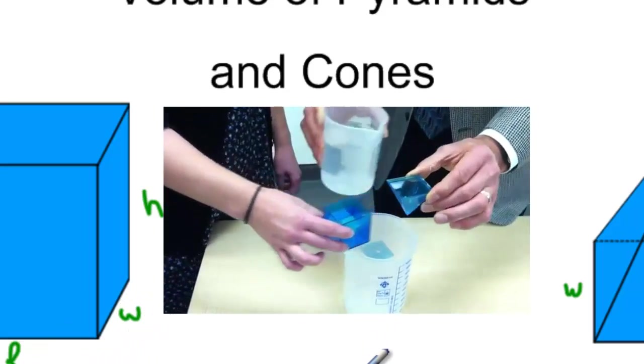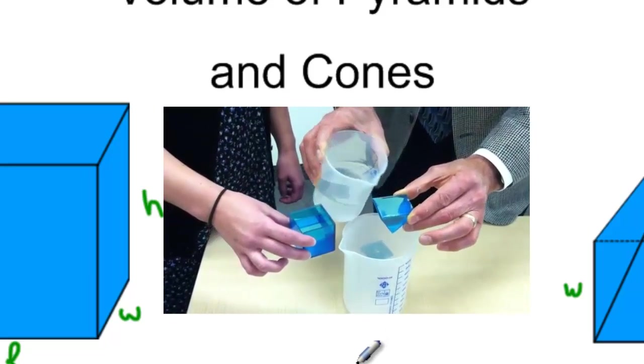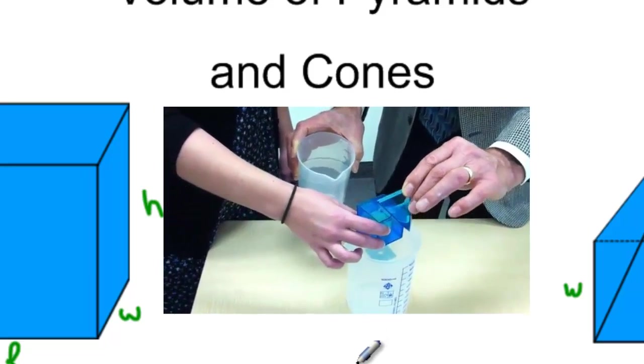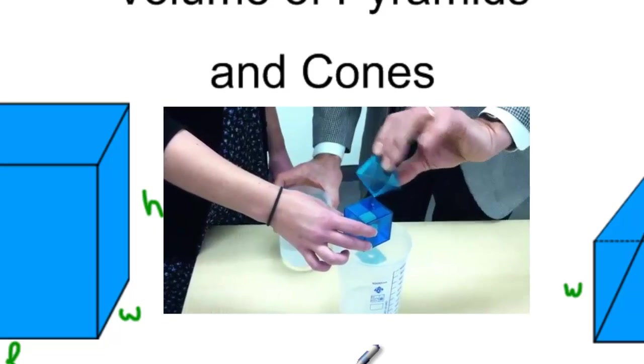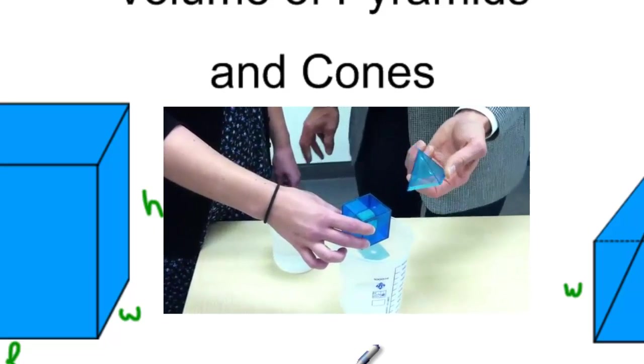And we see that the water doesn't fill it all the way, so we could fill the pyramid with water again, dump it into the cube, and one more time, and dump it into the cube.